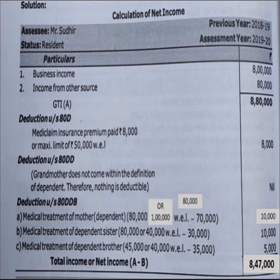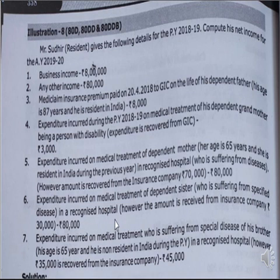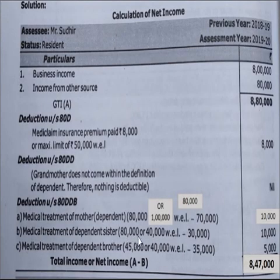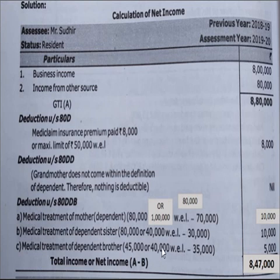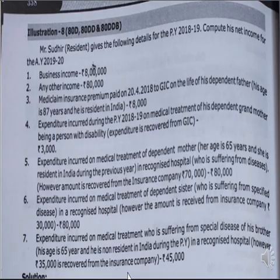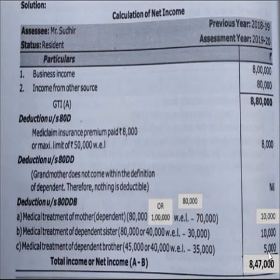Under Section 80DDB — dependent sister (non-senior citizen), maximum limit 40,000. Expenditure 80,000 vs. 40,000 — lesser is 40,000. Less insurance received: 30,000. Eligible deduction: 10,000. Dependent brother with specified disease — non-resident, age 65. Maximum limit 40,000. Expenditure 45,000 vs. 40,000 — lesser is 40,000. Less insurance received: 35,000. Balance eligible deduction: 5,000.